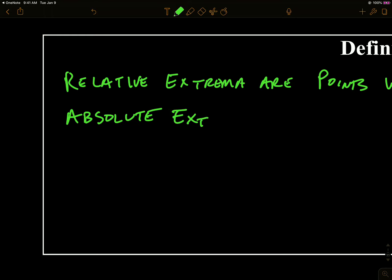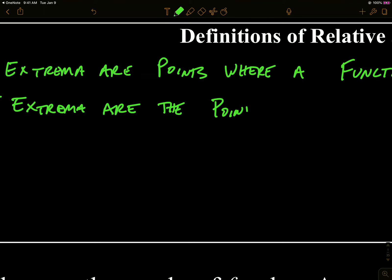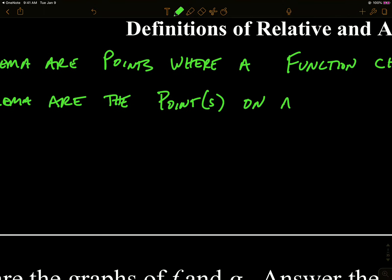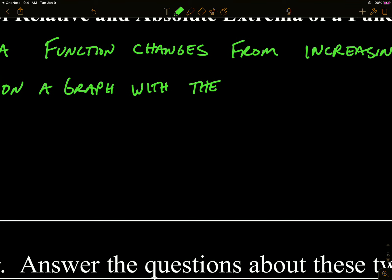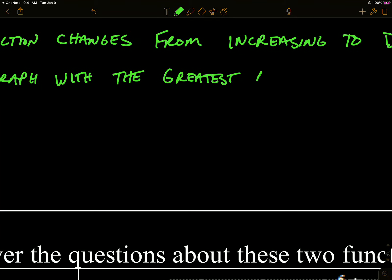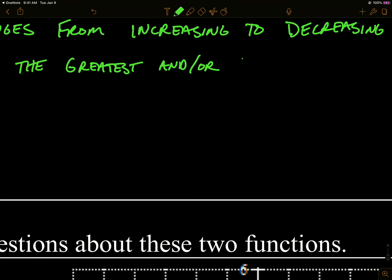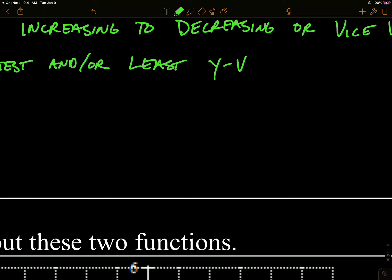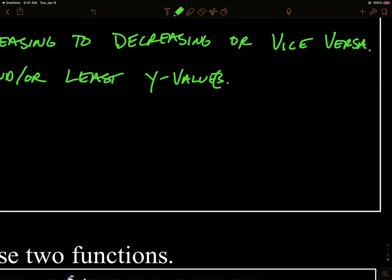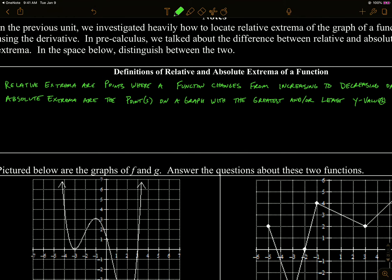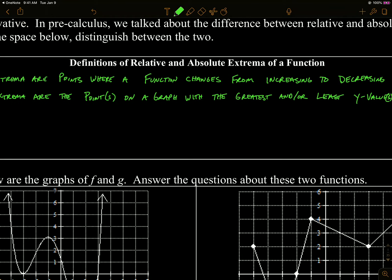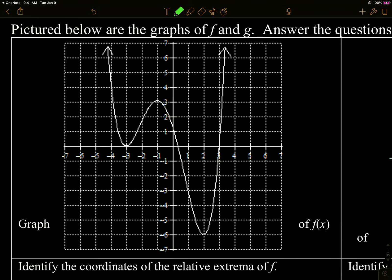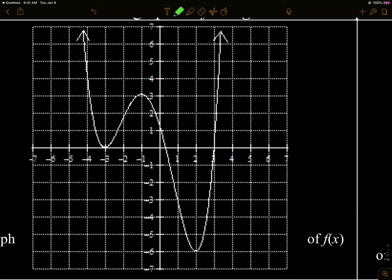Absolute extrema are the points that are the greatest on the entire graph, not just in the area, or the least. So they are the absolute, the definitive, highest and lowest points. And graphs don't always have to have absolute extrema.